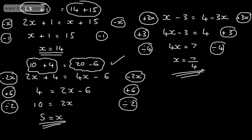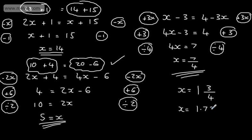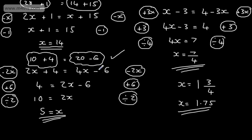So the answer is x equal to 7 over 4. Don't worry if it doesn't come out to a whole number. You could write this as a mixed number — since it's a top-heavy fraction, x equals 1 and 3 quarters, or x equals 1.75. Either of those answers would be perfectly fine. And that's a slightly harder example at this level.